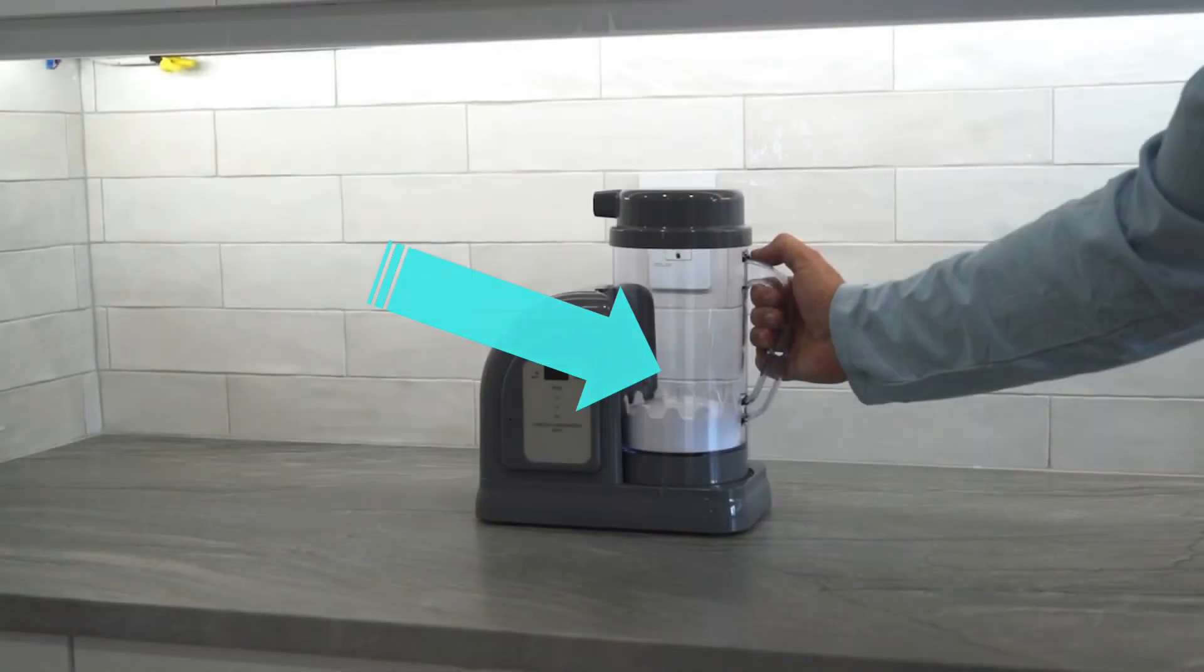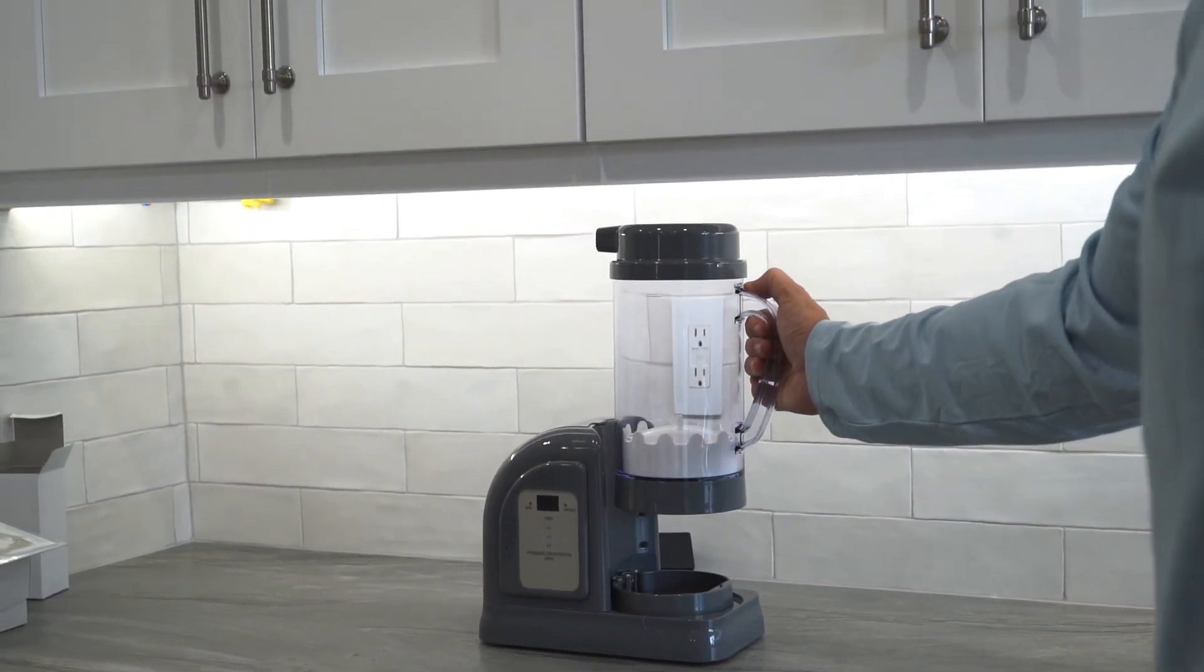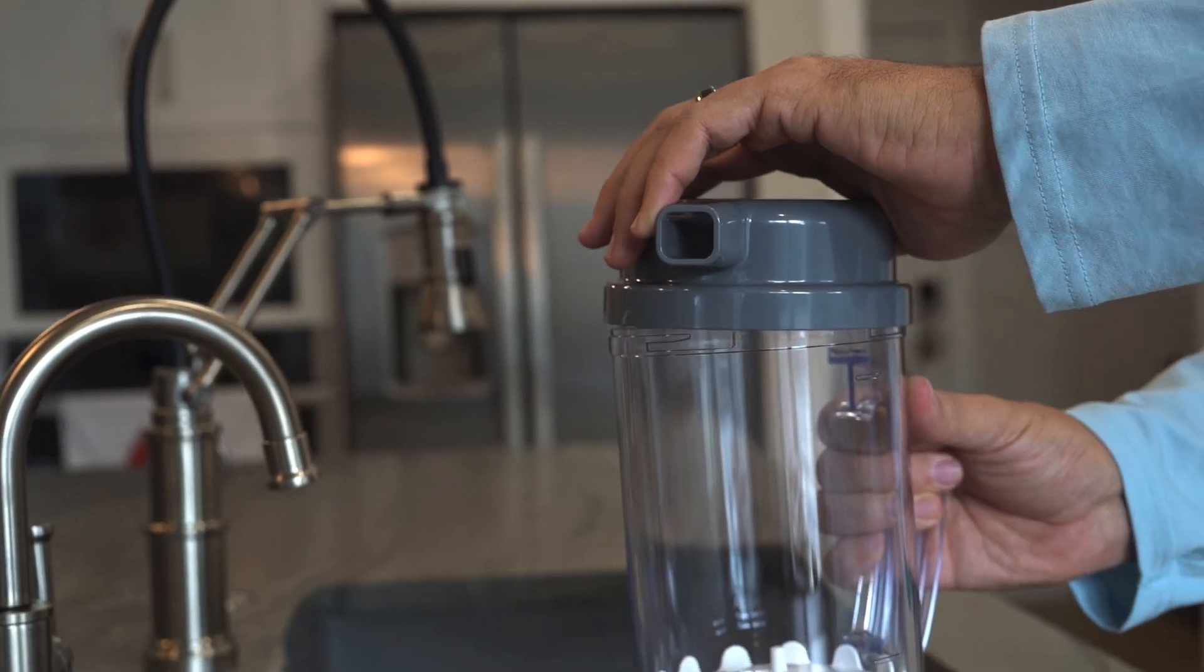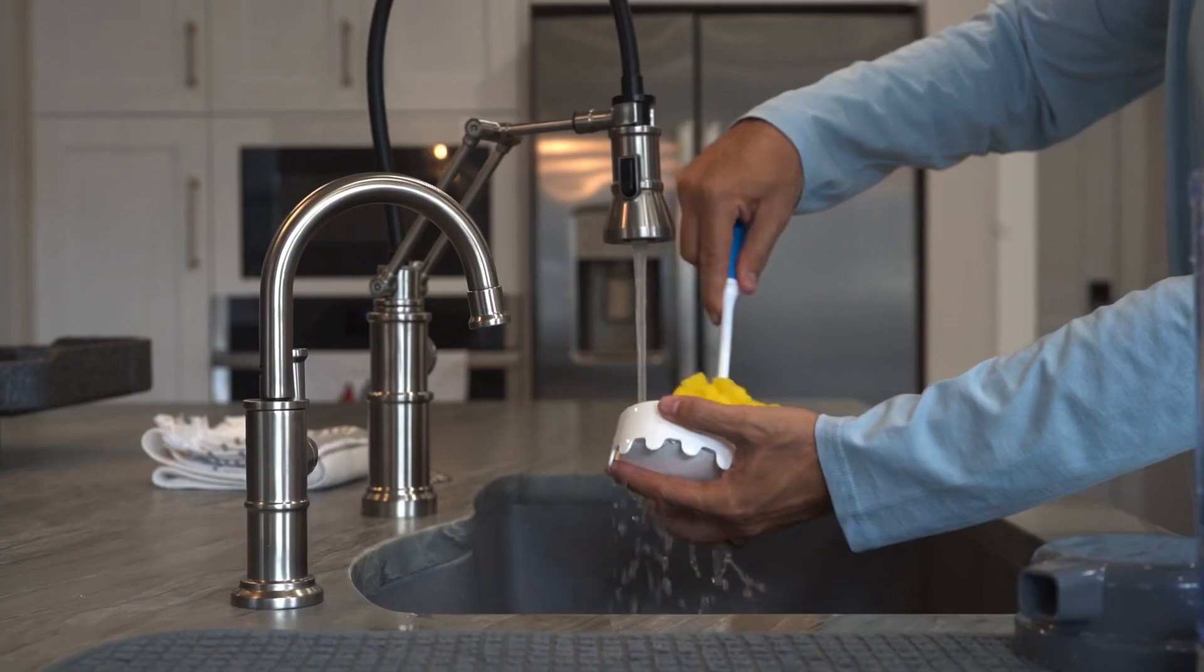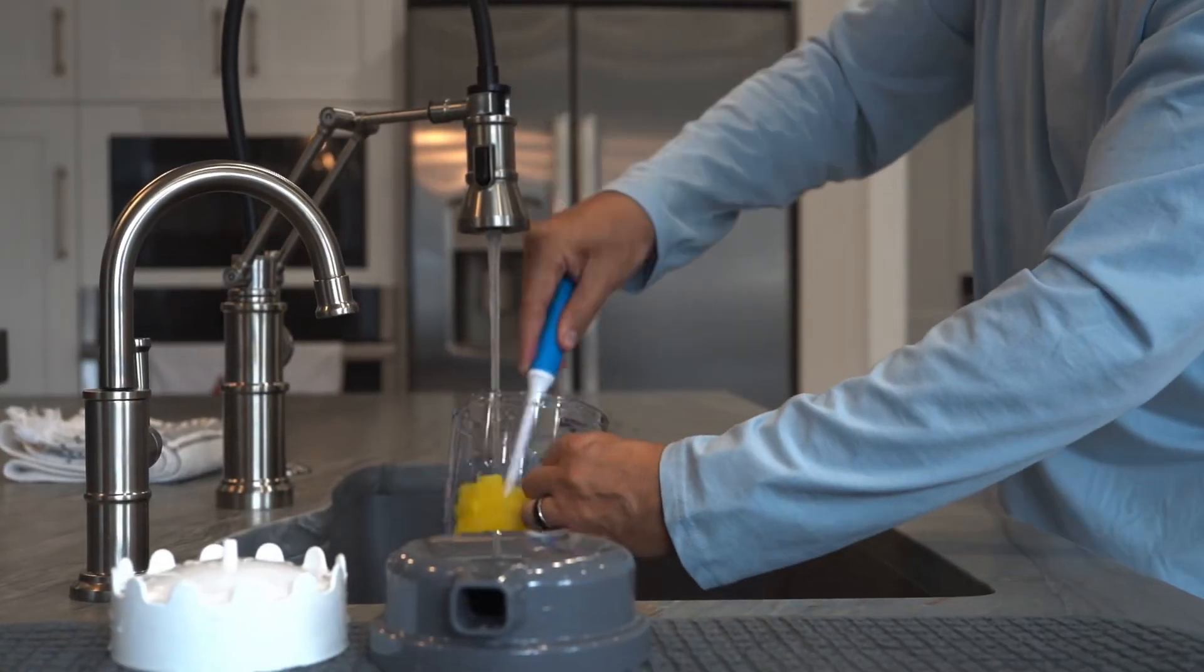Next, let's wash the pitcher and H2 keeper. First, remove the pitcher from the base unit by lifting straight up. To open the lid, give a slight twist and remove it. Then rinse the pitcher and the hydrogen keeper with a soft cloth or sponge.